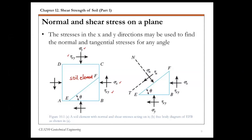The first thing to discuss is the sign convention used in geotechnical engineering, which is different from structural mechanics. For normal stresses, in soil mechanics we consider compressive force to be positive — positive is for compression — and negative is for tension.